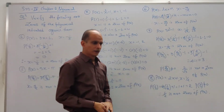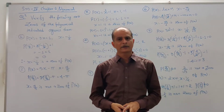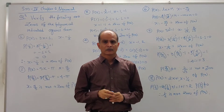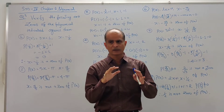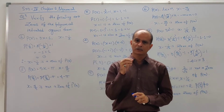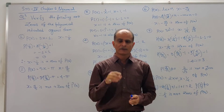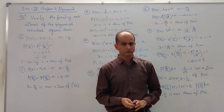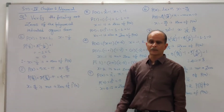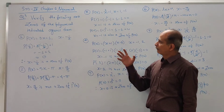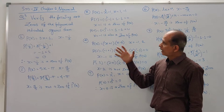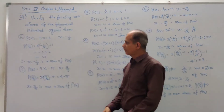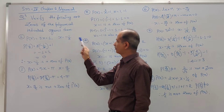Hello friends, we have already discussed a few concepts of polynomials. In Exercise 2.1 we found out how to find the degree of a polynomial. In Exercise 2.2, the first two examples covered finding the value of a polynomial for different values of variables. Now in Exercise 2.2, the third example, we have to verify whether the following are zeros of the polynomial or not. A polynomial and one value of the variable are given.